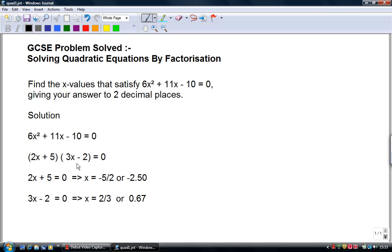And the other bracket, 3x - 2, put that equal to 0 as the other solution and that gives you x is 2/3 or 0.67.